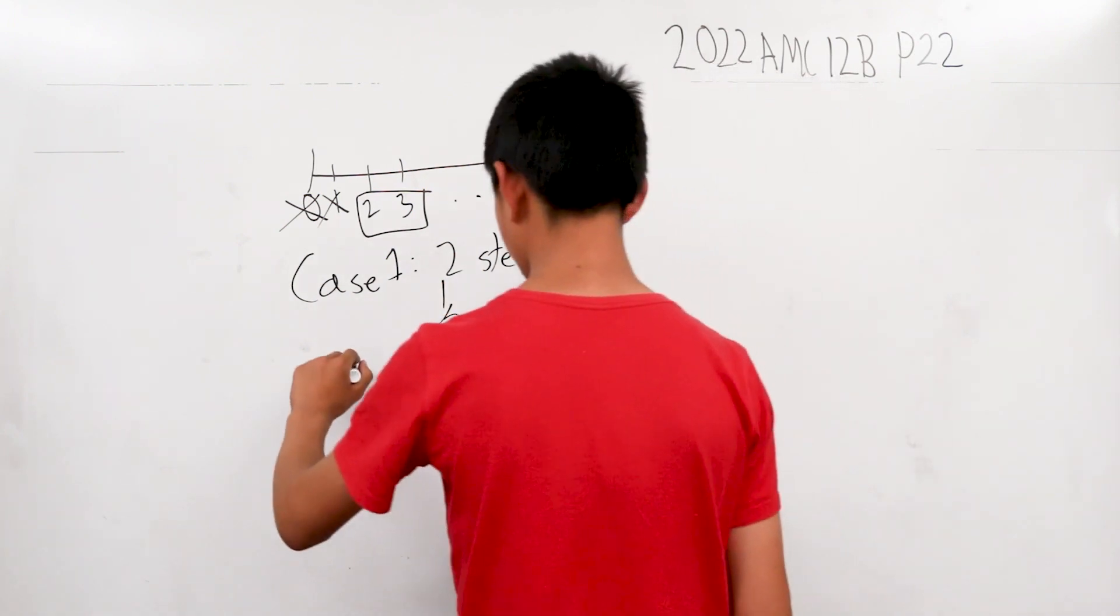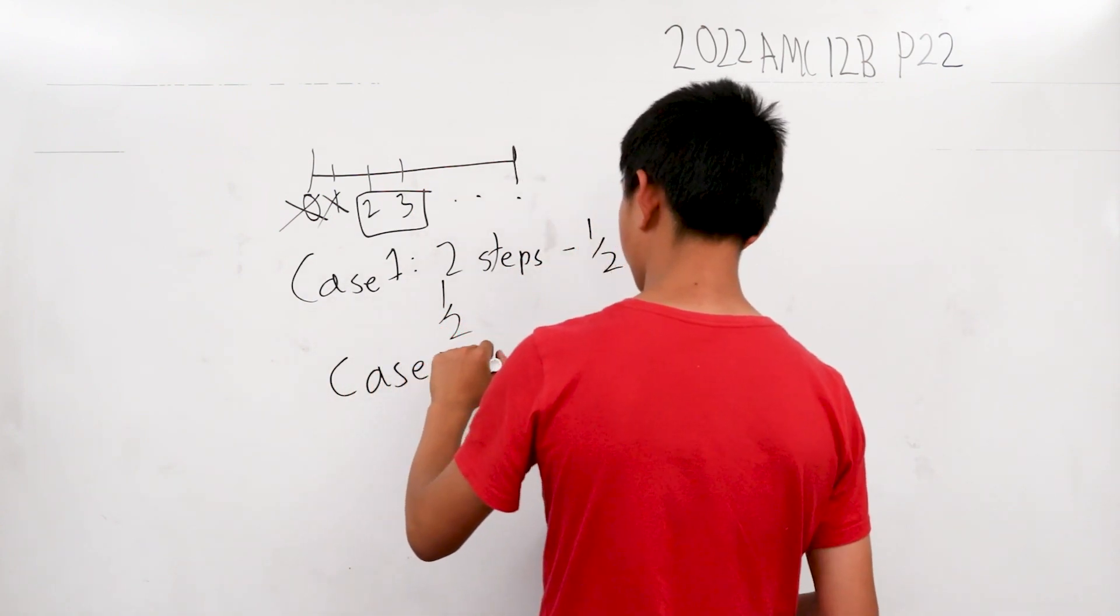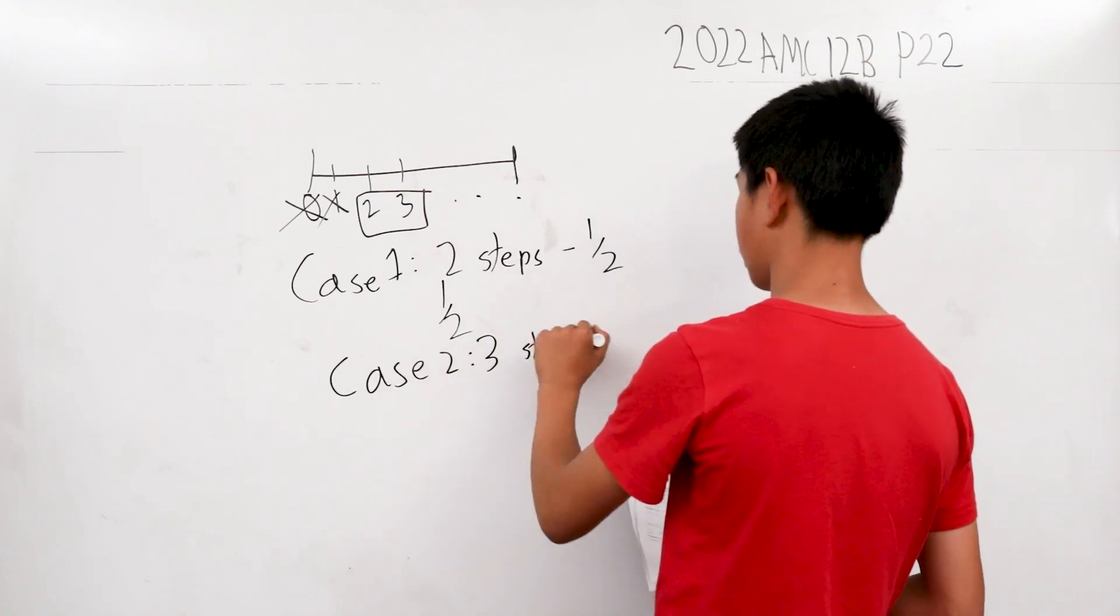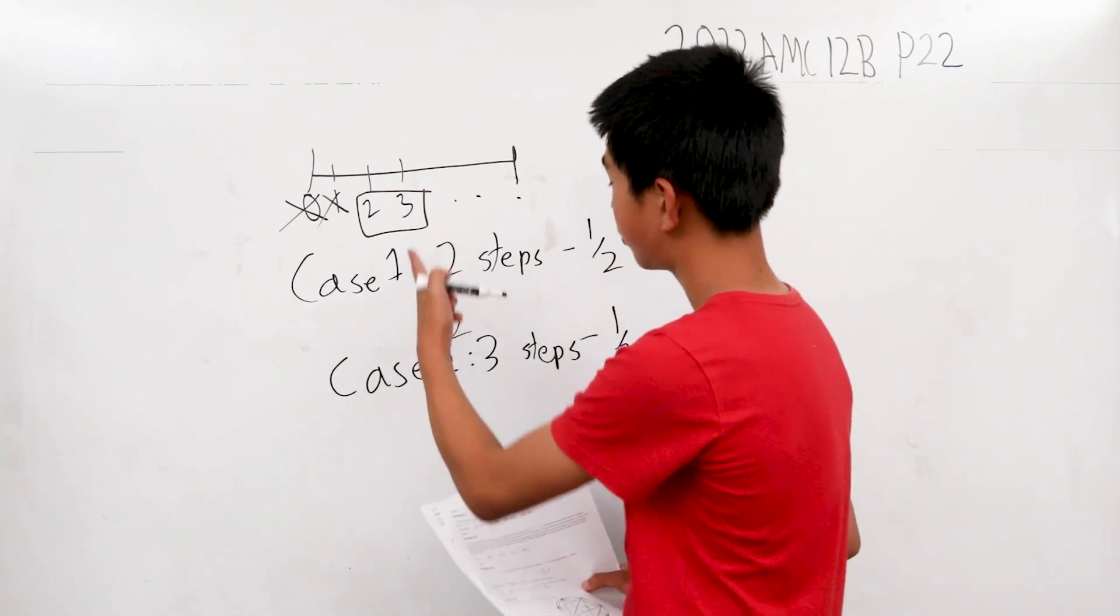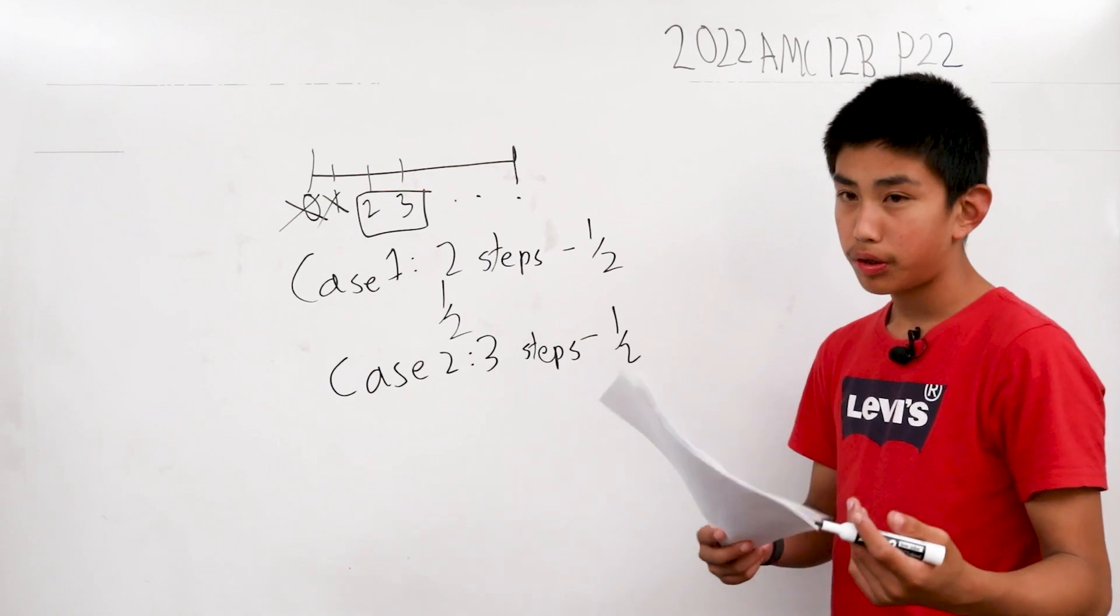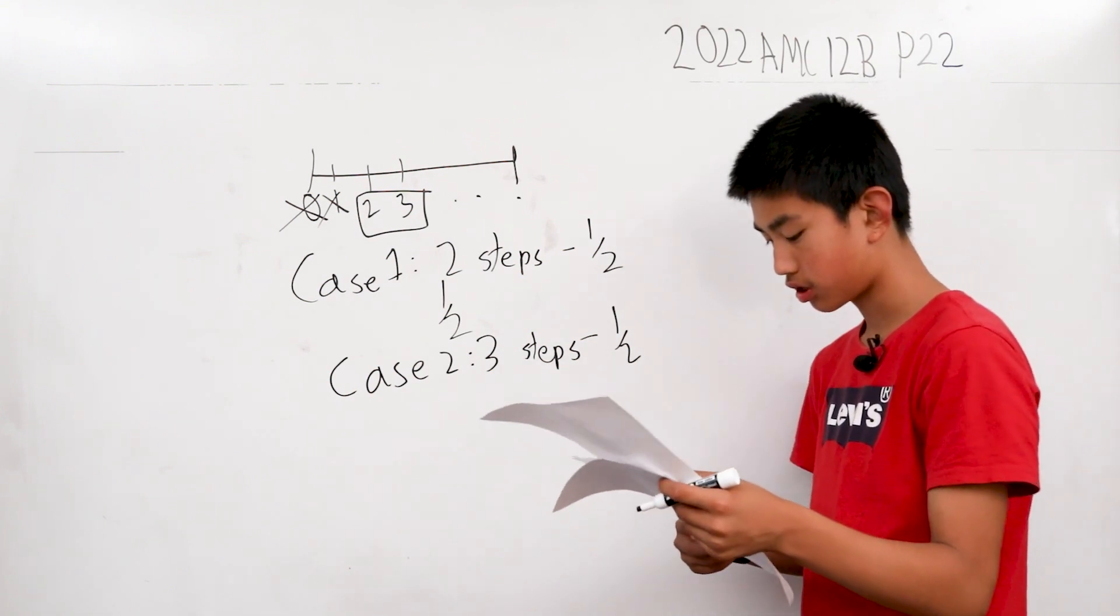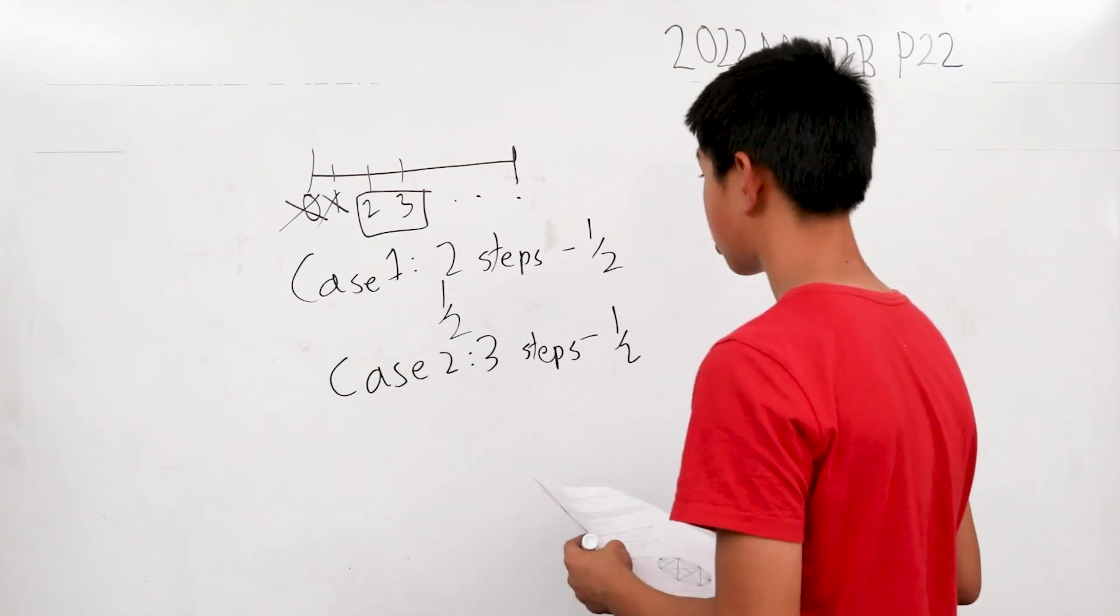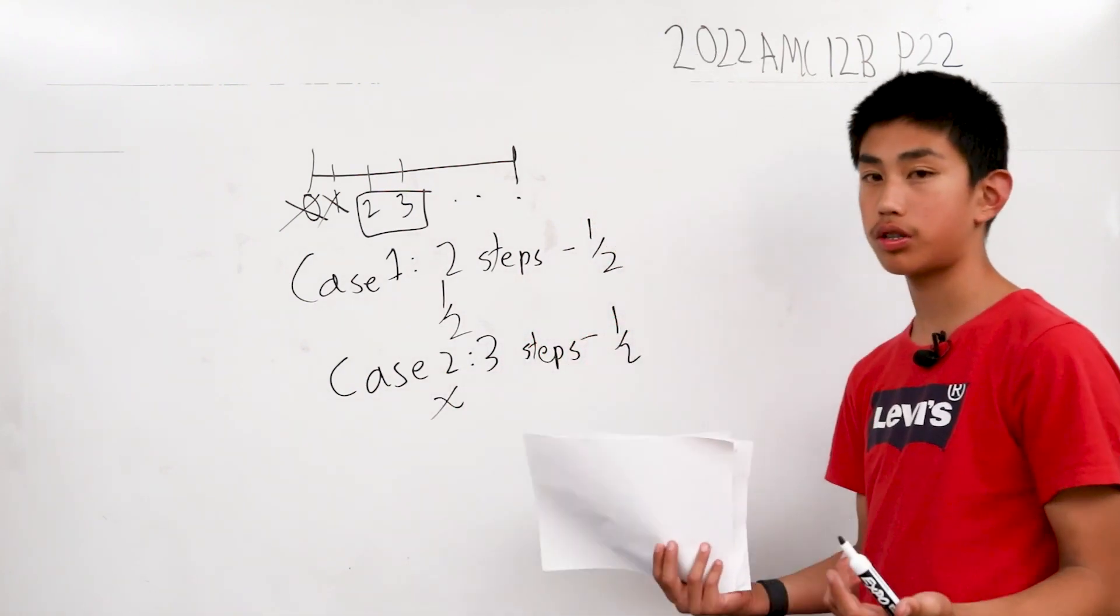Case 2. Case 2 is where she takes 3 steps. What's the probability that she crosses the number line after 3 steps? Well, that's just going to be a variable. Call it x because we don't know.